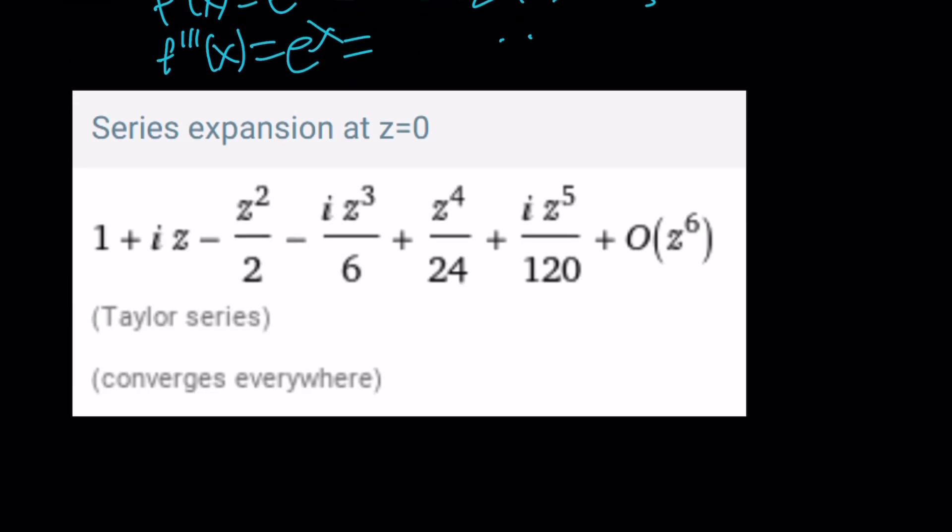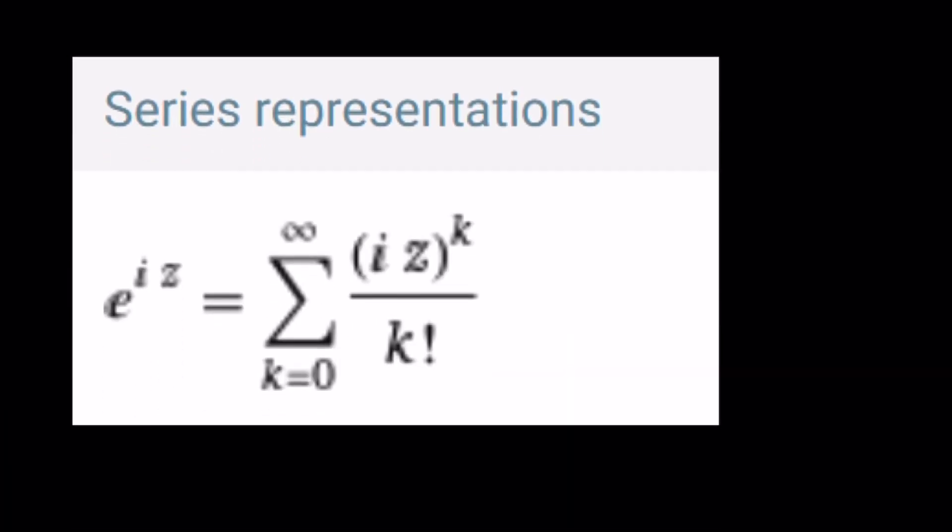So the series expansion, the Taylor series at z equals 0, is going to look like this. And the reason why we have the plus minus signs is z squared i squared. I squared is negative 1 and i to the third power is going to be negative i. That's why we get those negative values and then we're going to get some positive values. From here what am I getting?